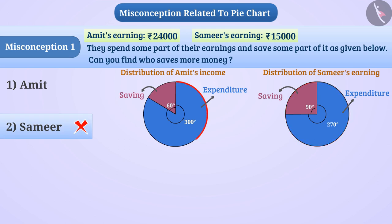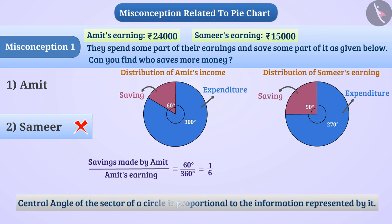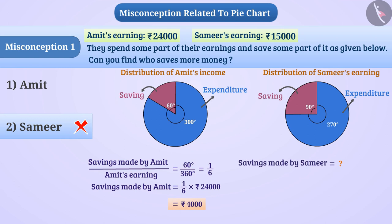They do not see the pie chart as a whole and its parts. Here, the total earnings are denoted by the whole circle. The angle representing Amit's savings is 60 degrees divided by 360 degrees, which equals 1/6 of the whole circle. Since the central angle of a sector is proportional to the information it represents, Amit's savings are 1/6 of his earnings — that is, 1/6 multiplied by rupees 24,000, which equals rupees 4,000.